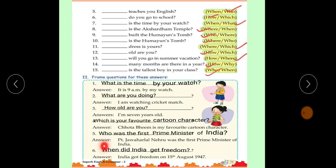Next one. Pandit Jawaharlal Nehru was the first Prime Minister of India. The question is, who was the first Prime Minister of India? Number 6. India got freedom on 15th August 1947. The question is, when did India get freedom? Okay?